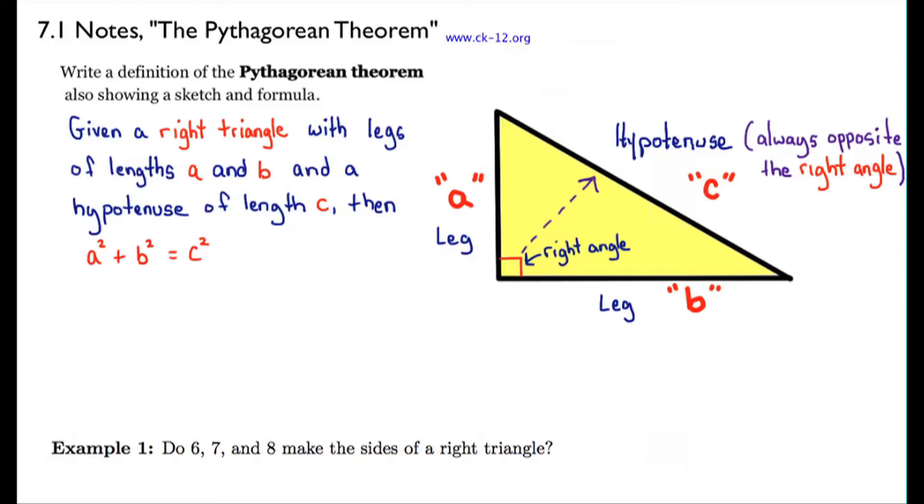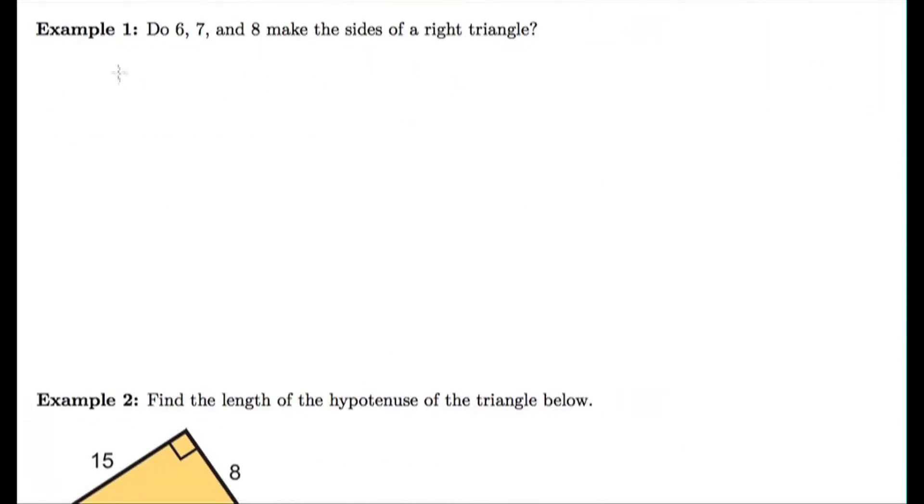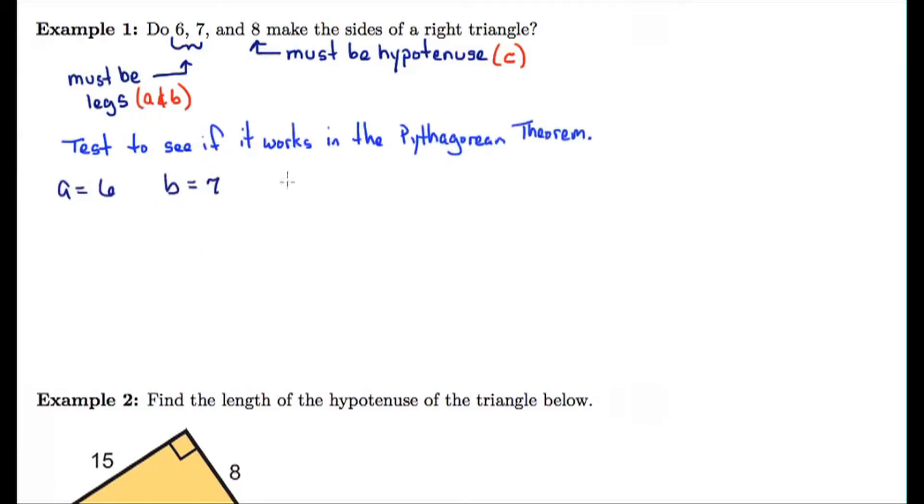Example one. Do 6, 7, and 8 make the sides of a right triangle? So 6 and 7 must be the legs because they're the smaller lengths and 8 must be the hypotenuse. Test to see if it works in the Pythagorean Theorem. Is it true when we substitute these values into a squared plus b squared equals c squared? So I will substitute 6 in for a, 7 in for b, and 8 in for c.